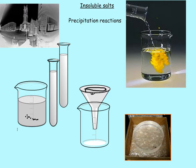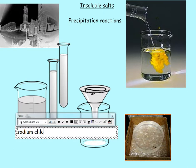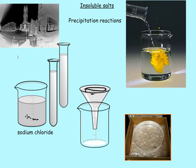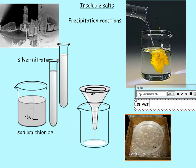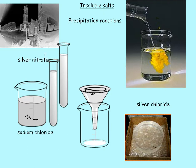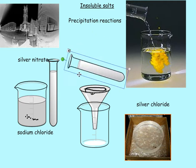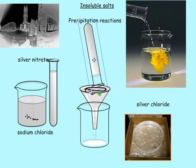So we had sodium chloride and we added silver nitrate, and we ended up with silver chloride crystals which I'm pouring into a petri dish. You can see that the silver has taken the chloride, and the sodium has taken the nitrate — so we get silver chloride as our insoluble salt.